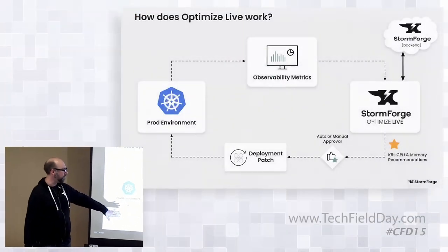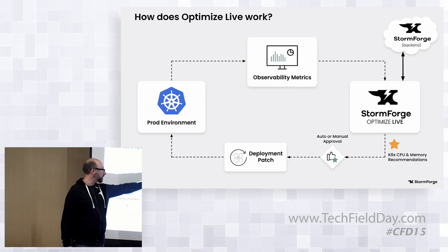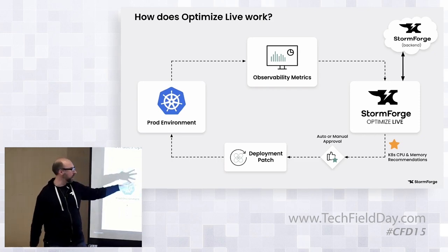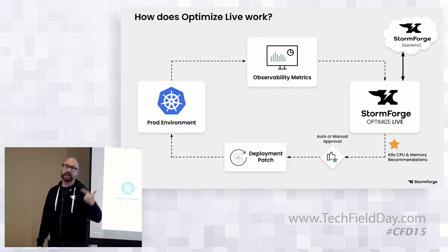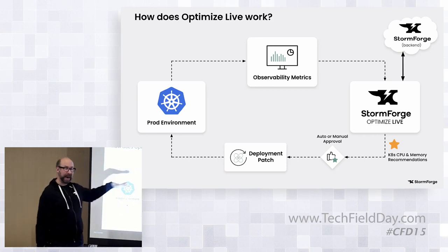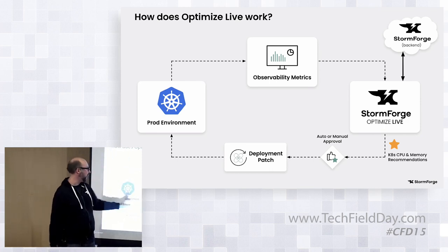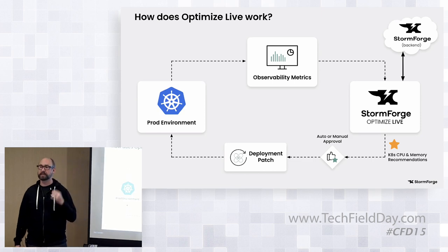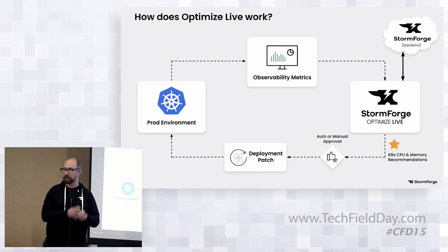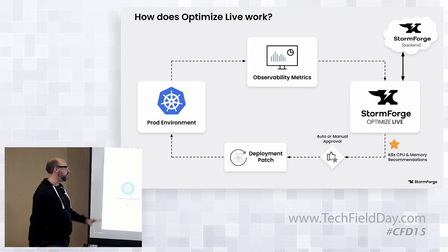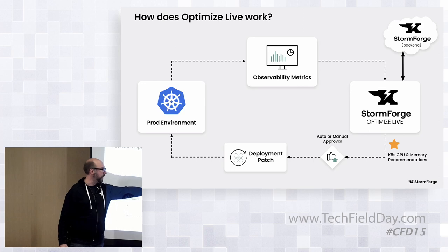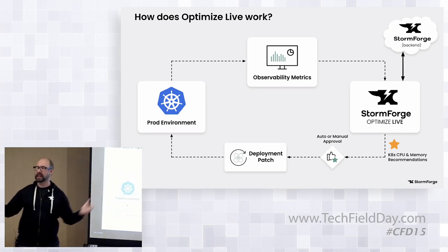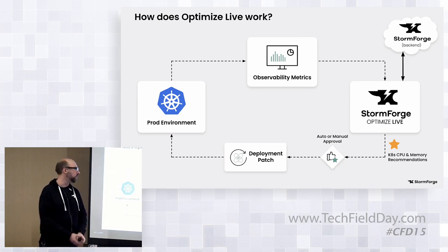Optimize Live is watching observability from systems like Prometheus and Datadog, seeing the requests that were made but also the actual usage, looking at that delta, looking at patterns over time, and then directly applying that via deployment patch to the Kube API. Once an hour is the most aggressive we get — the reason is some deployments don't instantly start up, startup times can be a thing, especially when orchestrating across a deployment with dependency chains. We don't want the machine learning watching a pod in the middle of a restart.